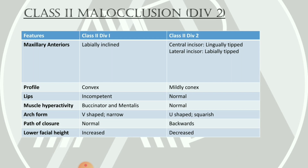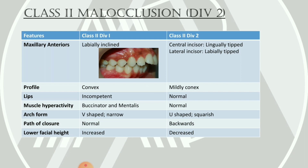We will compare Class 2 Division 1 and Division 2 side by side. Regarding maxillary anteriors: in Division 1, they are labially inclined, whereas in Division 2, the central incisors are usually lingually tipped and the lateral incisors are labially tipped, as seen in the figure. Regarding profile: Division 1 presents a convex profile, whereas Division 2 presents a mildly convex or normal profile.